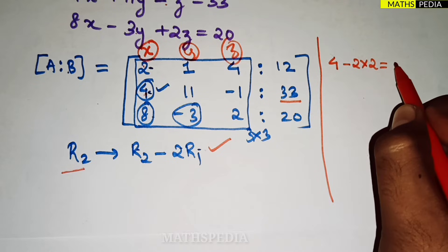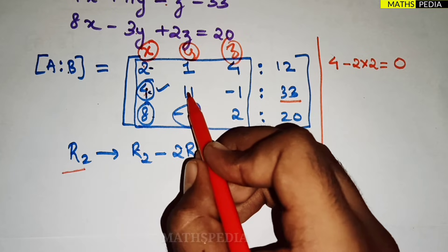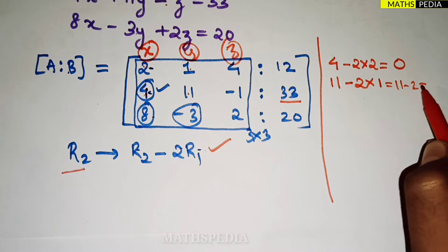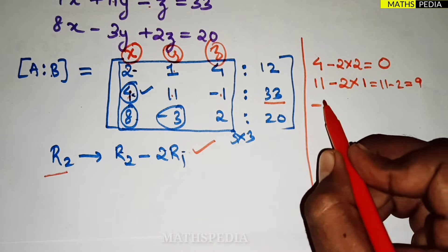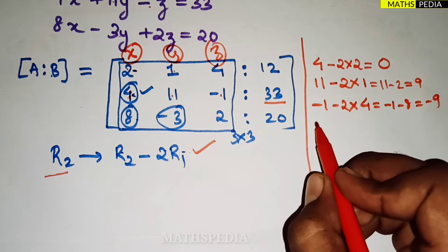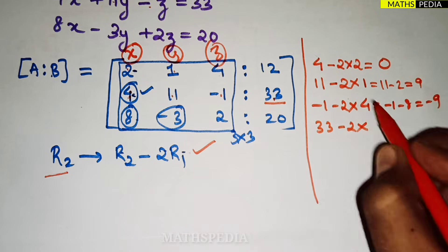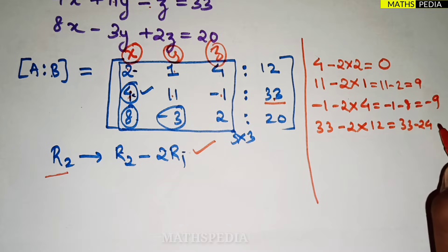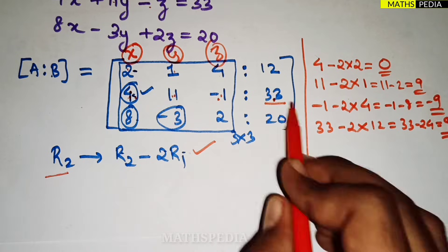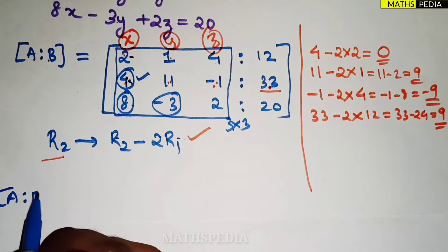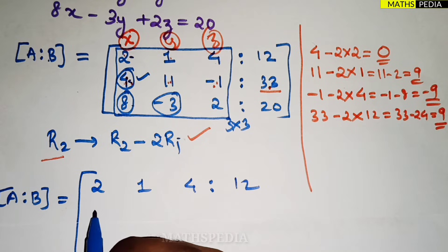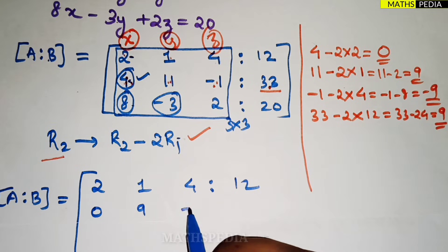Calculating R2 = R2 - 2*R1: first element 4 minus 2×2 = 0. Next, 11 minus 2×1 = 9. Next, minus 1 minus 2×4 = minus 1 minus 8 = minus 9. Last, 33 minus 2×12 = 33 minus 24 = 9. So the new second row is 0, 9, minus 9, 9. The augmented matrix now has first row 2, 1, 4, 12 and second row 0, 9, minus 9, 9.